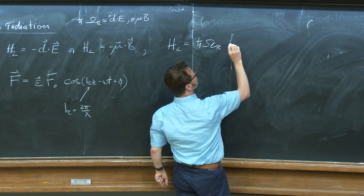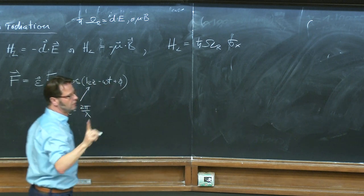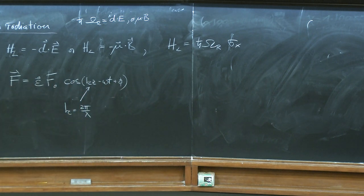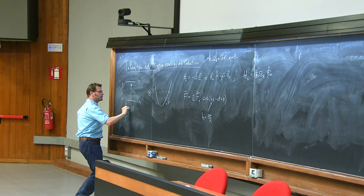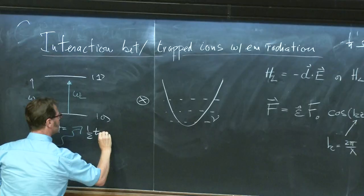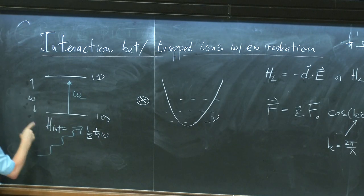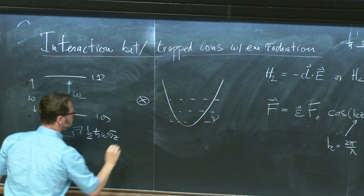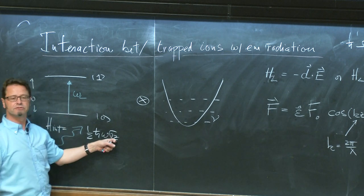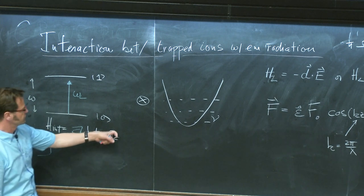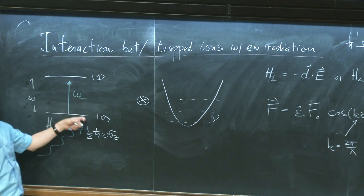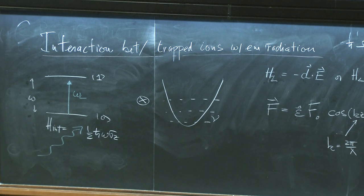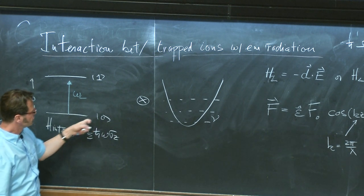The internal Hamiltonian is given by one-half H-bar omega times sigma_Z — that's the usual Pauli matrix. So this is just a two-level system that can be described like a spin: spin up or spin down. You can imagine this as being spin up or spin down in a magnetic field, and this is your Hamiltonian.